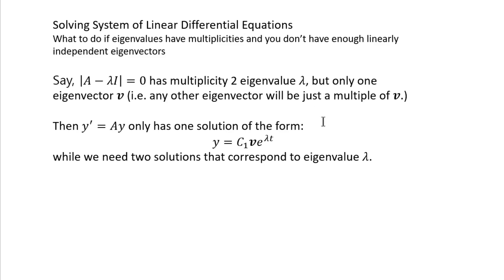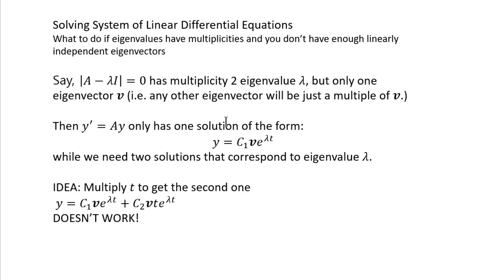So how do you get the other solution from this single eigenvalue? One idea is to repeat what worked before. When you solved second order differential equations and the characteristic equation had multiplicities, you just put an extra t on the previous solution and that gave you a linearly independent solution.